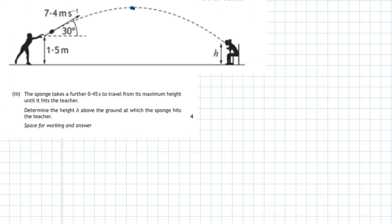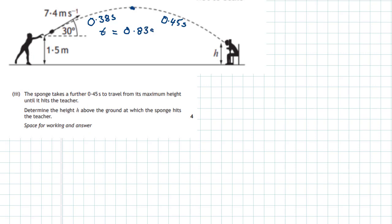Part 3 of question 1A: the sponge takes a further 0.45 seconds to travel from its maximum height until it hits the teacher. Determine the height h above the ground at which the sponge hits the teacher. The time from start to top is 0.38 seconds, and a further 0.45 seconds to strike the teacher, giving a total time of 0.38 + 0.45 = 0.83 seconds from launch to impact.